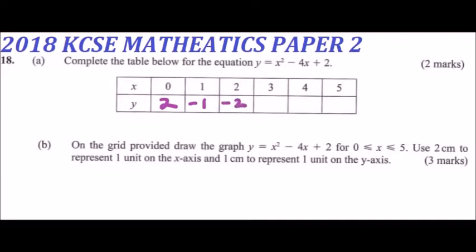When x = 3, y = -1; when x = 4, y = 2; and when x = 5, y = 7. Those are the values you get from the table. By filling in the correct values you earn two marks.